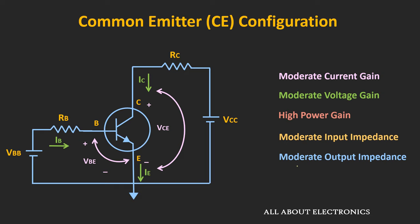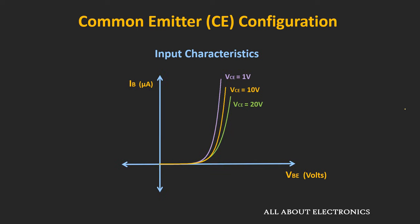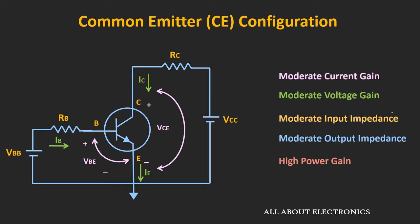In this configuration, the input and output impedance are in the moderate range. The output impedance is typically in the range of 50 to 100 kΩ. Although it is high, it is lower compared to the common base configuration, because the collector curves in the output characteristic are not perfectly horizontal. The input impedance is typically in the range of kΩs, and can be found by finding the slope of the input characteristic — given as ΔVbe divided by ΔIb. We will see in detail about all these properties during the AC analysis of the BJT, where we will also find the exact values of voltage gain and input and output impedance.